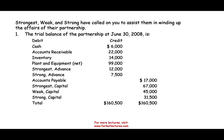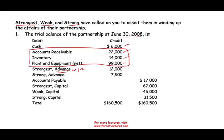Let's look at a trial balance. We have three partners — Strongest, Weak, and Strong — who have called us to assist in winding up the partnership as of June 30th. They have cash of $6,000, receivables of $22,000, inventory of $44,000, and property, plant, and equipment of $99,000. Strongest has an advance (loan from the partnership) of $12,000, and Strong also has an advance of $7,500. Accounts payable is $17,000, which must be paid first.